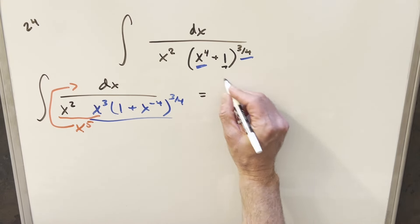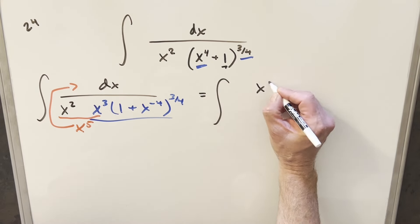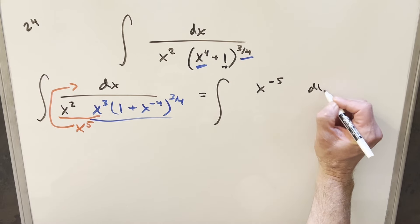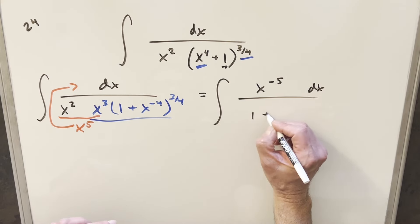So then by doing that and rewriting in the numerator, now we're going to have x to the minus 5 dx all over just this 1 plus x to the minus 4, to the 3/4ths.